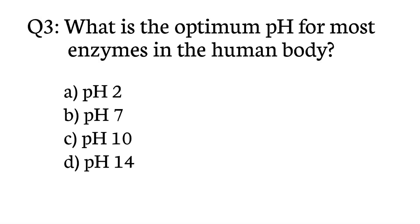Question number 3. What is the optimum pH for most enzymes in the human body? The correct option is option B: pH 7.